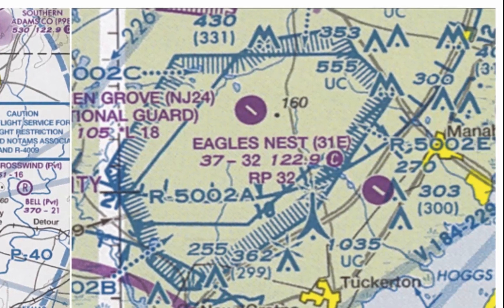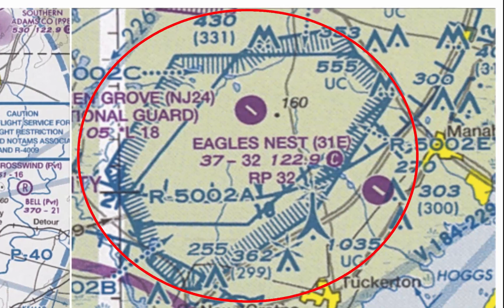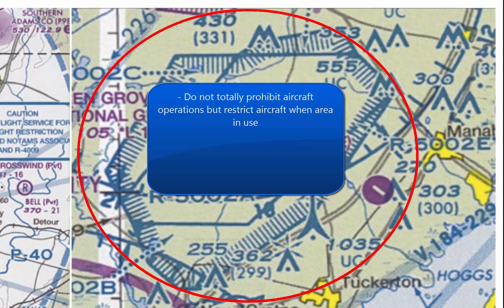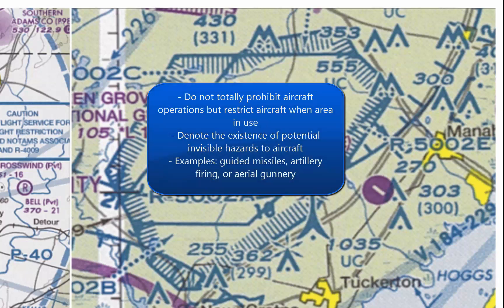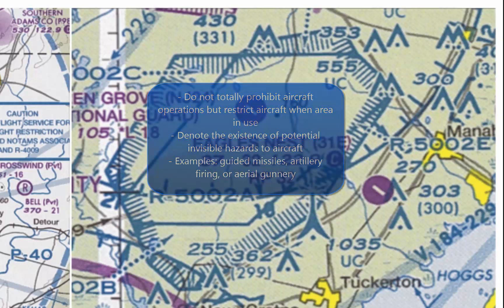To the right is an example of a restricted area. These areas do not totally prohibit aircraft operation, but restrict aircraft when the area is in use. These areas often pose invisible hazards to pilots if in use — for example, guided missiles, artillery firing, or aerial gunnery. If the area is in use, ATC will make sure pilots avoid the area. But if not in use, aircraft are allowed to freely operate in the airspace.